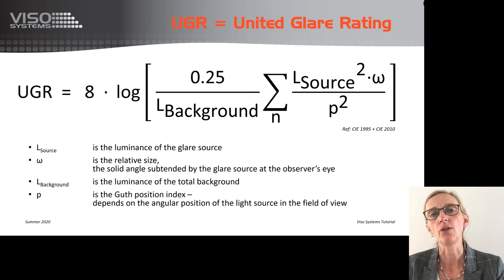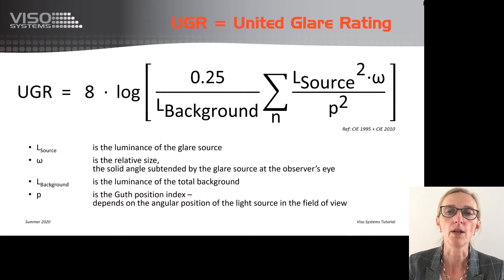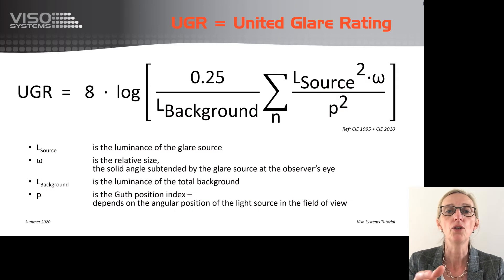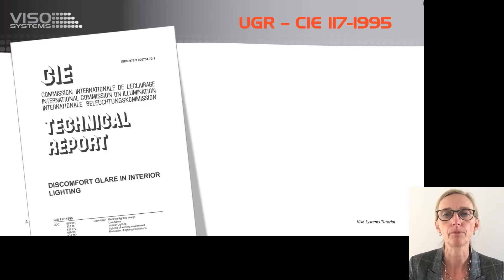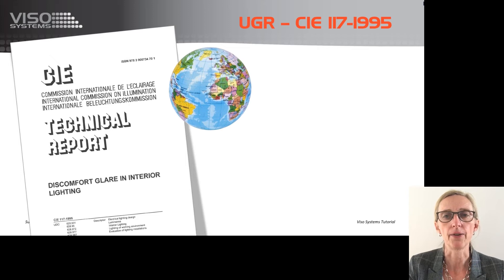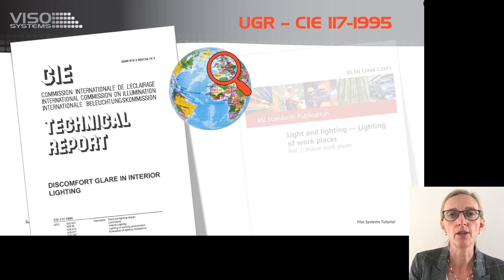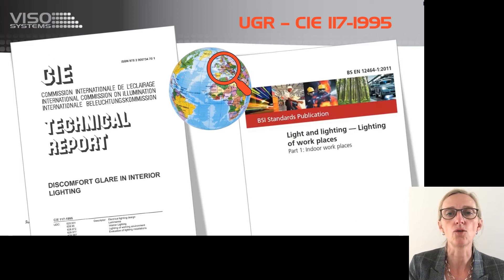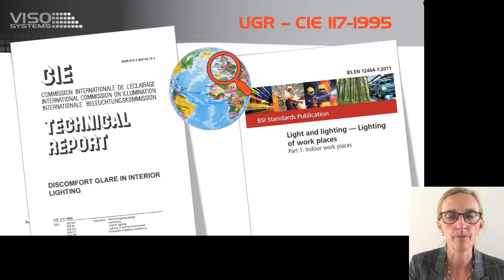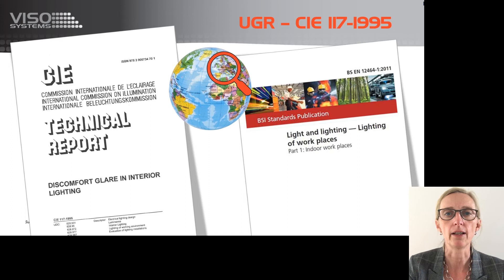UGR is calculated for all light sources in the space and summarized. The rest of the function contains operators that make UGR a nice round number, usually between 13 and 28. UGR is the world-recognized standard for specifying glare. Many regional design standards refer to UGR when specifying glare limits, for example the European standard EN 12464-1. According to this standard, the maximum glare level in office spaces is 19 and in hallways typically 22. At UGR 13, glare is barely noticeable, whereas at 28, glare is intolerable.